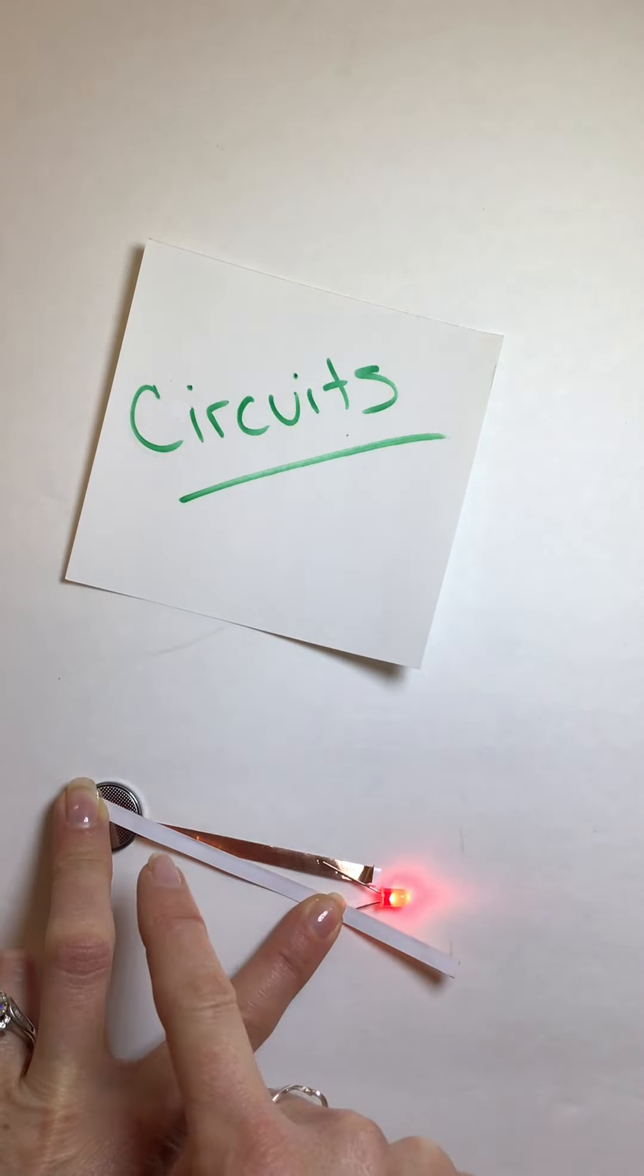So some of you might have some of these at home. These are called snap circuits. And it's the same thing. I have my power source, which are batteries. I have my path right here. And now I have a load. And the load is the light.